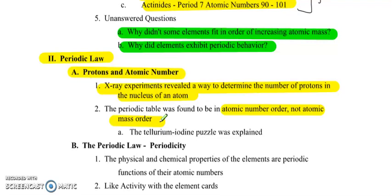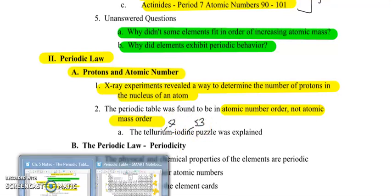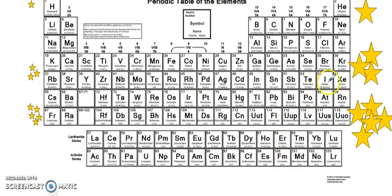Just a note, this was what Mosley discovered at the end of our video, and this gave us the answer to our tellurium-iodine problem. So if you look up the number of protons, you'll find that tellurium has 52 protons, and iodine has 53 protons. So if we look at that order, yes, tellurium should come before iodine.